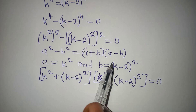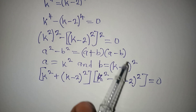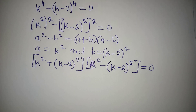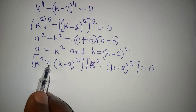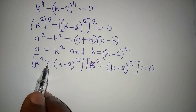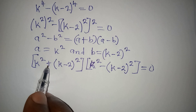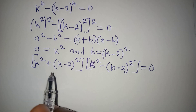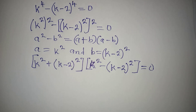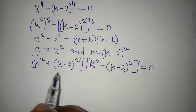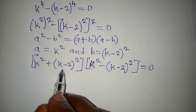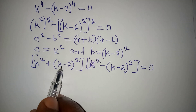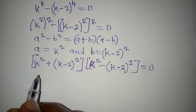In the second bracket it will be k squared minus (k minus 2) squared, and this equals zero. Now you might be tempted to open the bracket with the addition here, but it's not allowed — you have to deal with the brackets first.